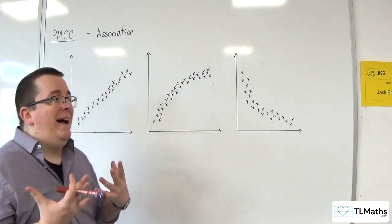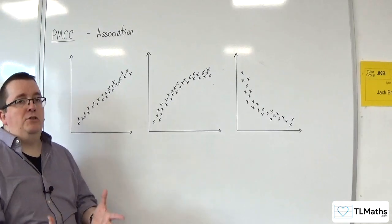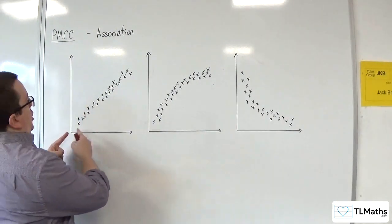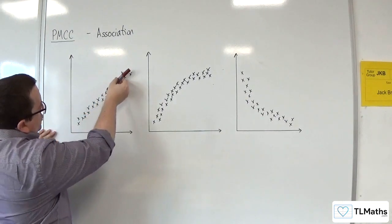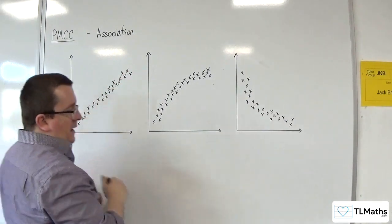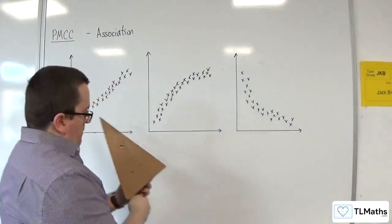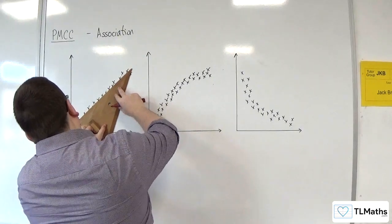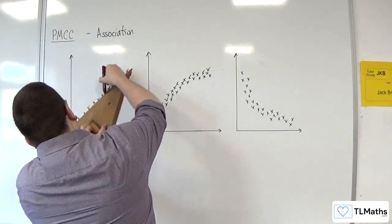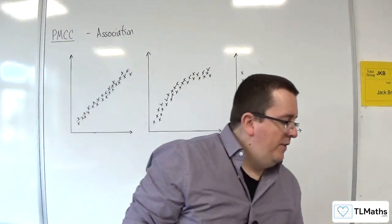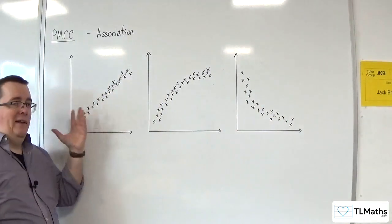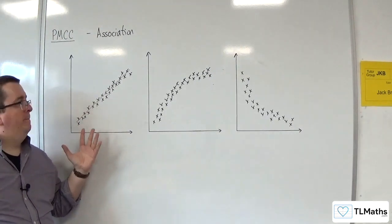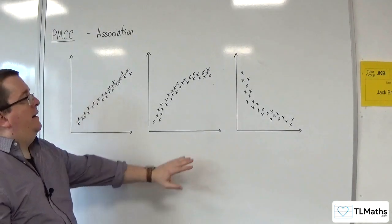Correlation is talking about how close the data is to being on a straight line. You can see it's close to being a straight line, so I can draw my line of best fit. This is also referred to as linear association, because linear means straight line.